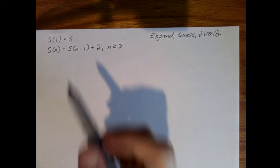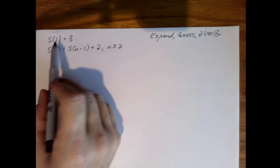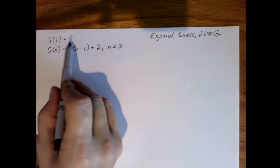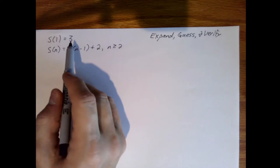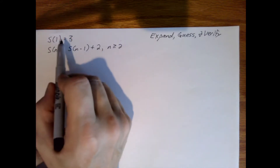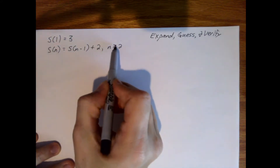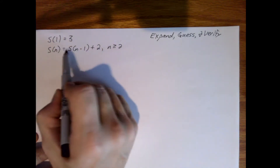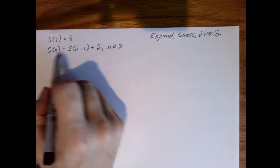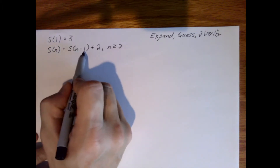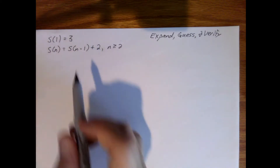Here we have a recursive definition. Our basis is s of 1 is equal to 3, and then for each additional value, when n is greater than or equal to 2, s of n is equal to s of n minus 1 plus 2.